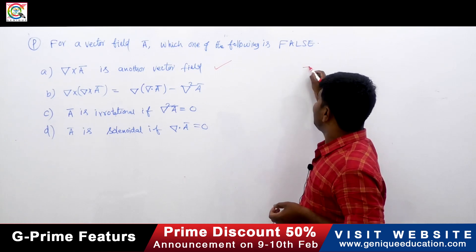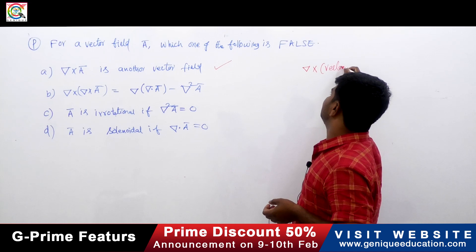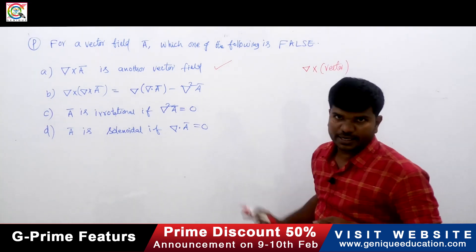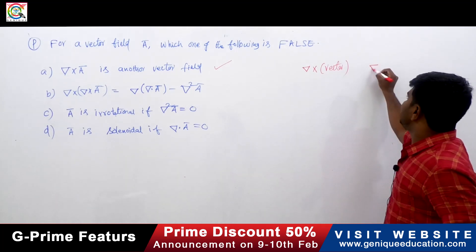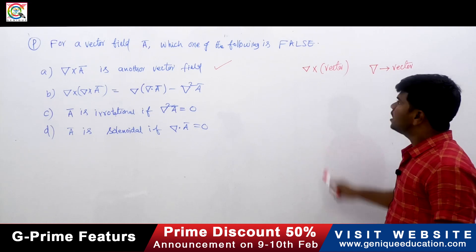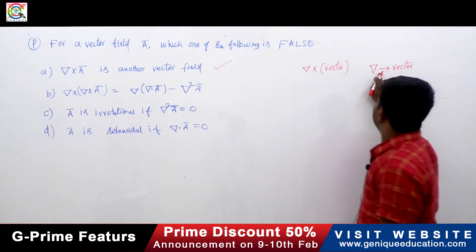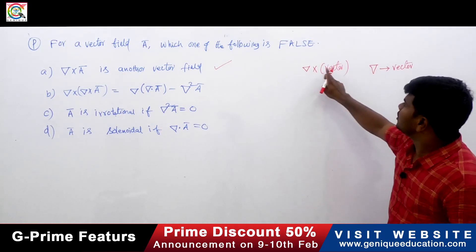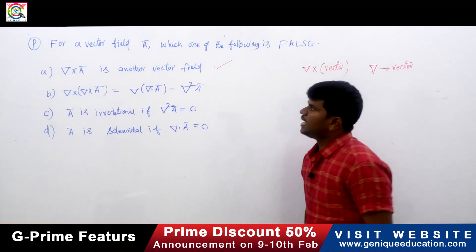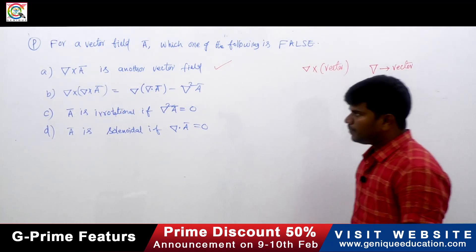We always apply the cross product only on vectors. Del is a vector quantity, so vector cross vector gives you a vector. Therefore, del cross ā is another vector field — option A is correct.